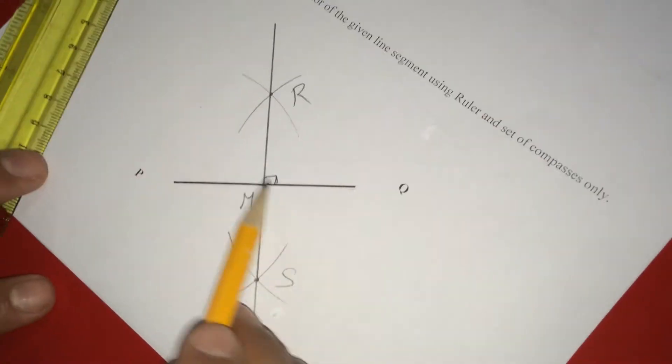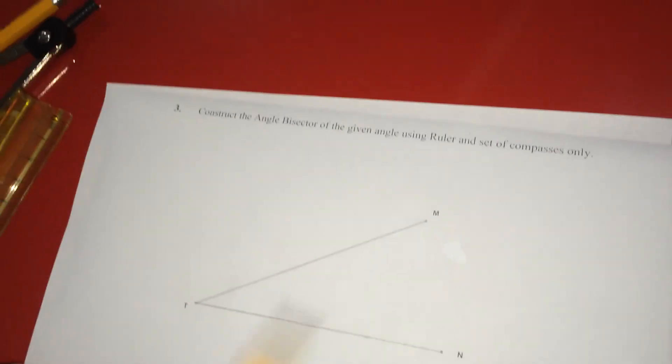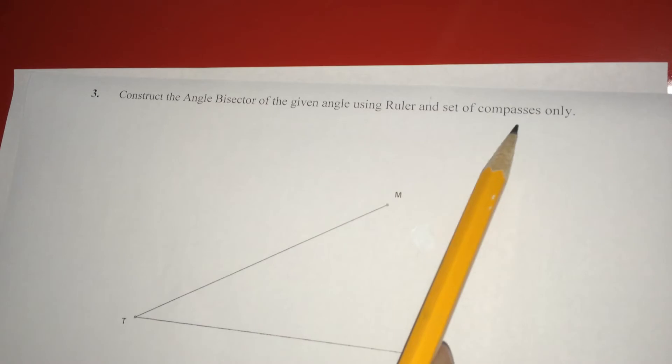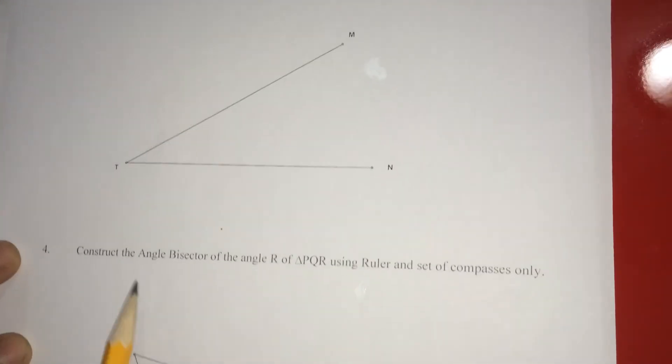So in this way, you have to construct the perpendicular bisector. The same procedure after constructing this like this, you can do the same procedure for this problem also. Afterwards, let us see this third and fourth. He is asking, construct the angle bisector of the given angle using ruler and set of compasses only. That means, for this angle.